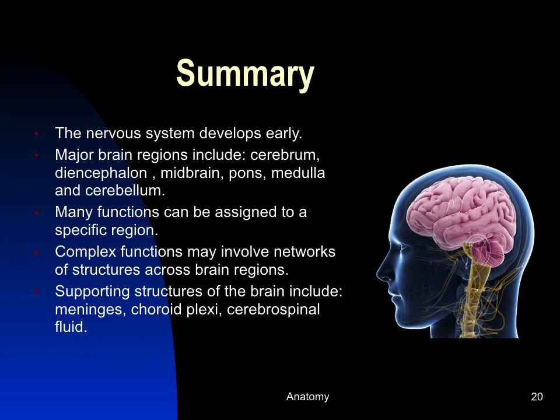In summary, the nervous system develops early from anterior swellings in a hollow neural tube. Major brain regions include the cerebrum, diencephalon, midbrain, pons, medulla, and cerebellum. Specific functions can be assigned to specific regions, but complex functions like motor control, emotion, and arousal involve networks of structures across brain regions. Supporting structures include the meninges, choroid plexus, and cerebrospinal fluid.